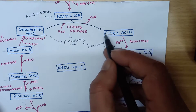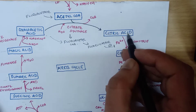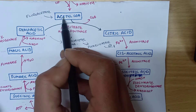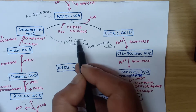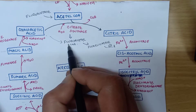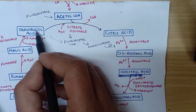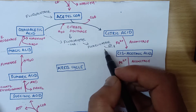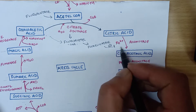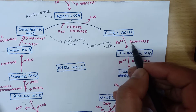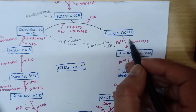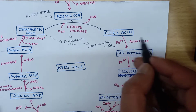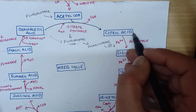Citric acid will therefore accumulate. To summarize: fluoroacetate binds with acetyl coenzyme A to form fluoroacetyl coenzyme A, which condenses with oxaloacetic acid to form fluorocitrate. Fluorocitrate non-competitively inhibits aconitase — the enzyme that isomerizes citric acid into cis-aconitic acid — resulting in accumulation of citric acid.